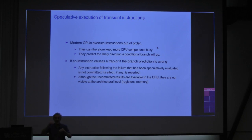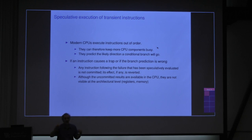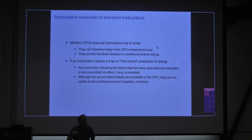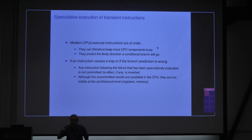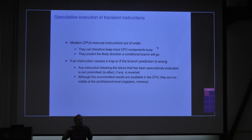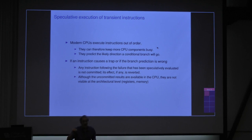Sometimes an instruction isn't needed — for example, with a conditional branch. Modern CPUs guess which way you're going to go and start executing instructions on that side. If it turns out the guess was wrong, the CPU never commits those instructions — any results are discarded. What if one of those speculative instructions would access invalid memory and cause a trap? It doesn't actually trap until we decide that instruction is one we want to commit. As long as it's speculative, it doesn't trap, and instructions after it might also be speculatively executed.